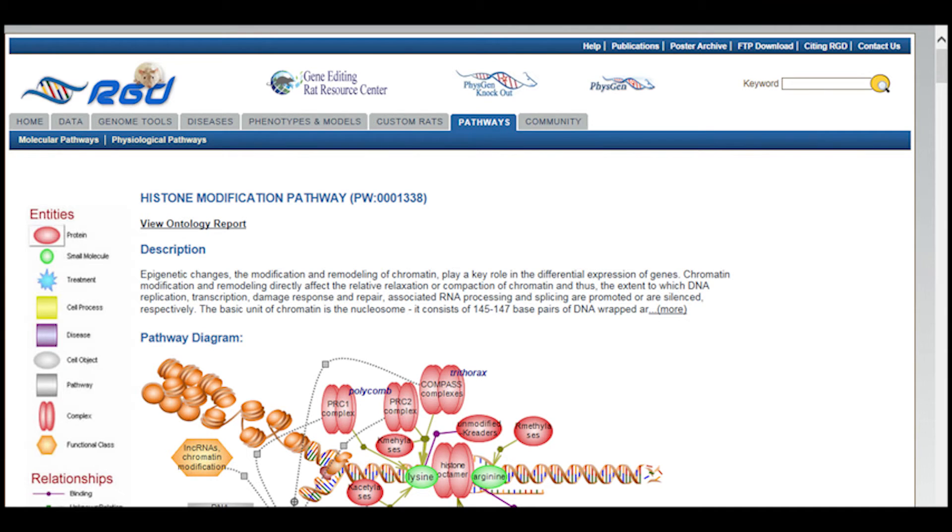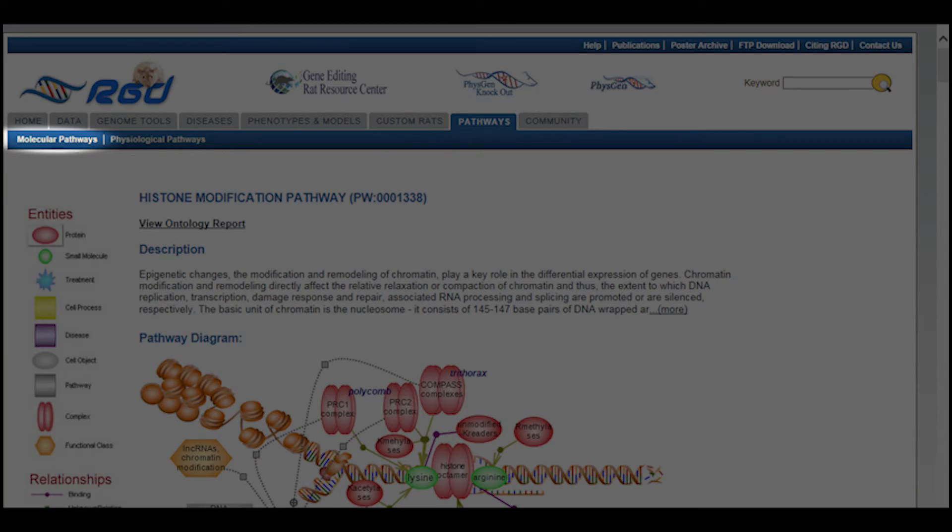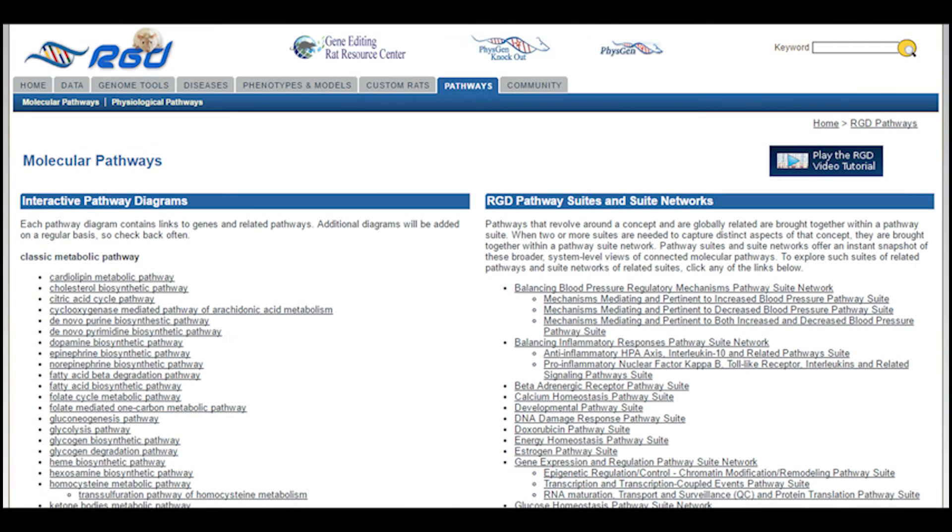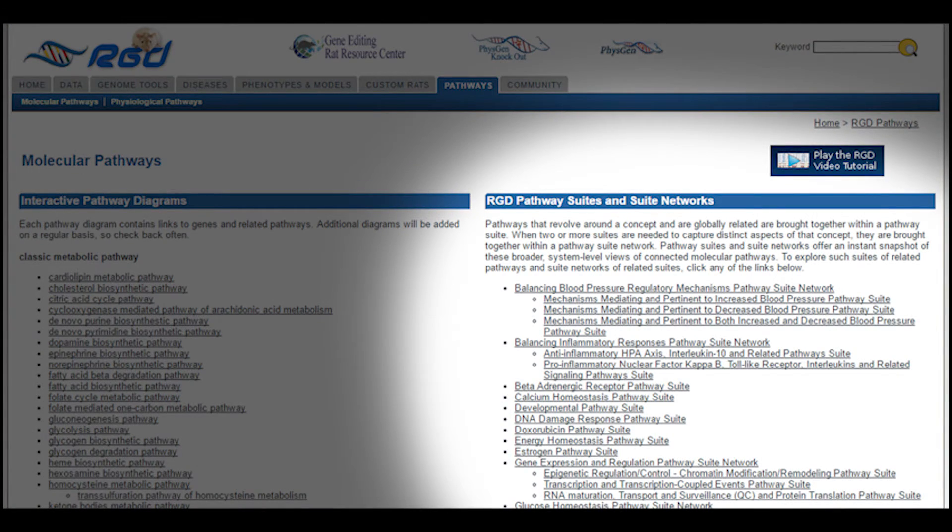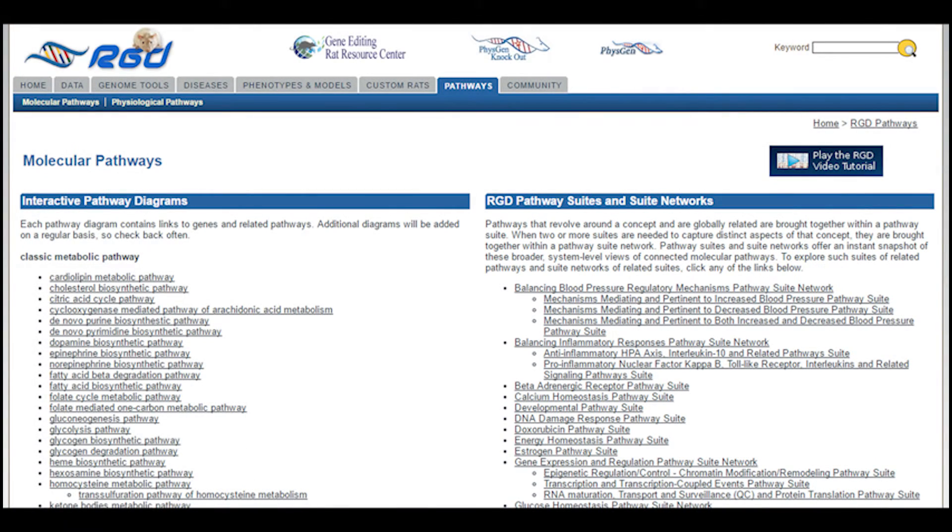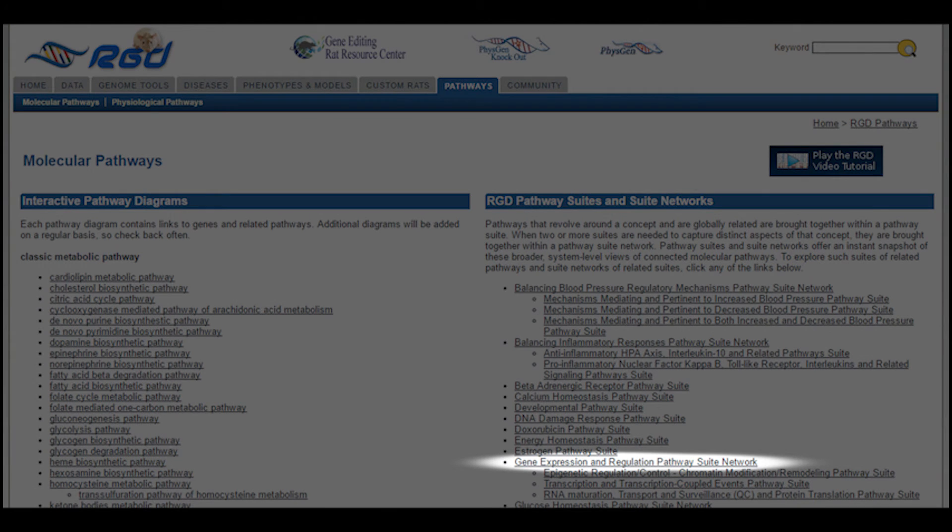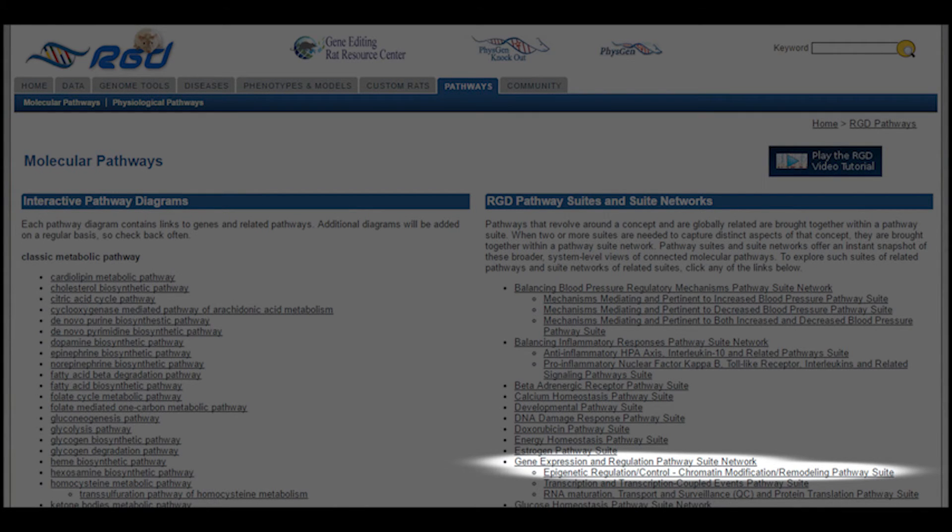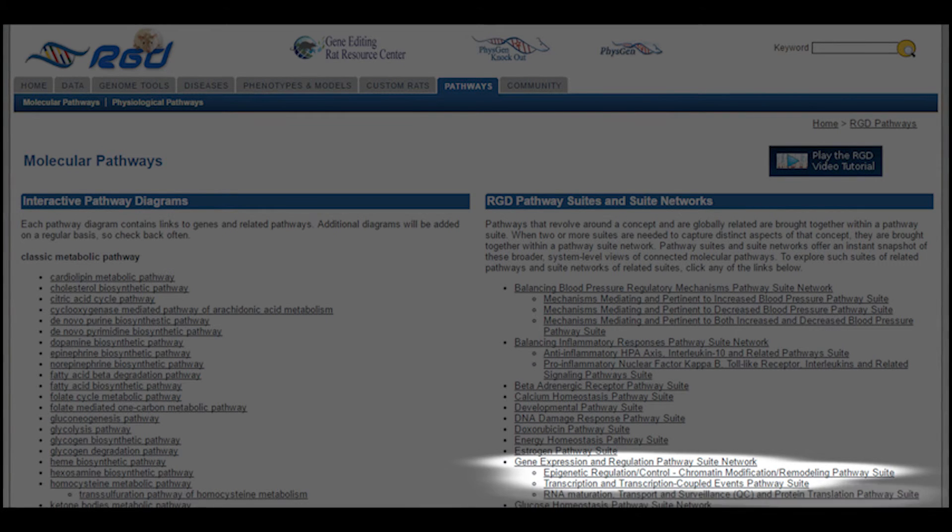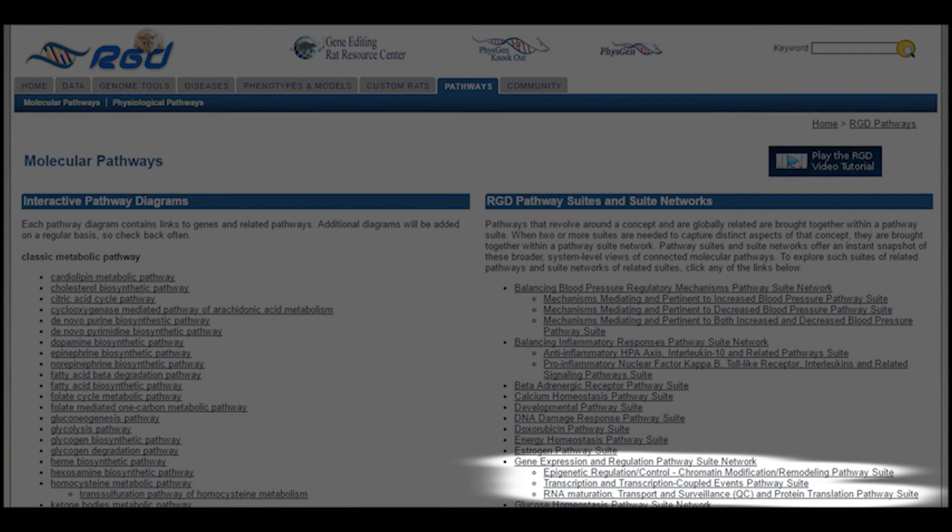Scrolling back up to the top of the page, click on the menu item in the blue bar labeled molecular pathways. In the right column on the resulting page is a list of pathway suites and suite networks. Pathway suites are groupings of related pathways. Where appropriate, these suites are further grouped into suite networks, as indicated by the hierarchical listing here. Looking at the gene expression and regulation pathway suite network, you can see that it is composed of the epigenetic regulation control, chromatin modification remodeling, transcription and transcription coupled events, and RNA maturation, transport and surveillance, QC, and protein translation pathway suites.